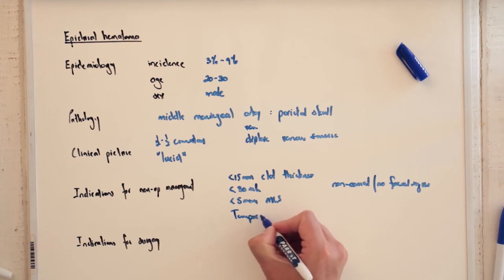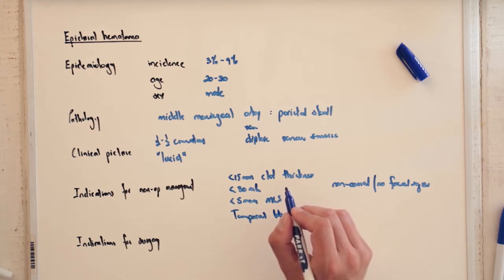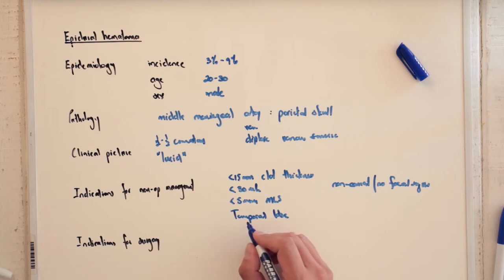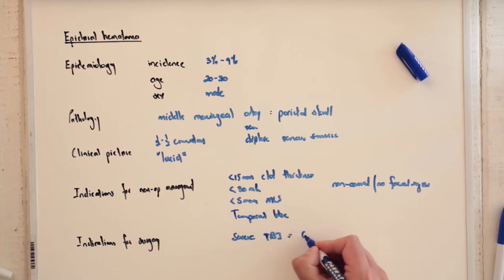Now patients that should undergo surgical management and surgical evacuation are those with severe traumatic brain injury. So we are talking Glasgow Coma Scale of 3 to 8 should be considered.